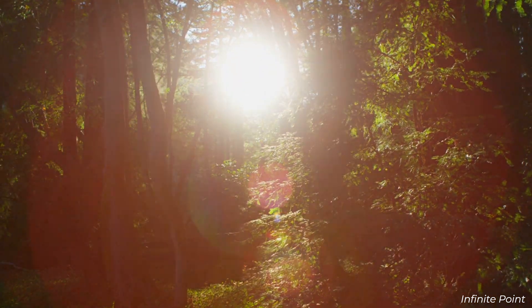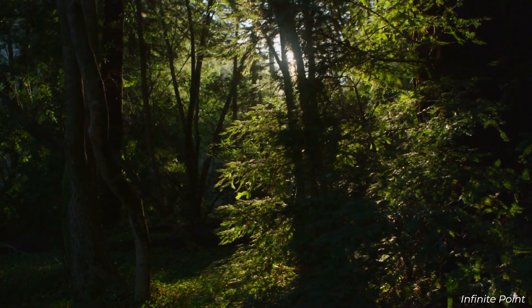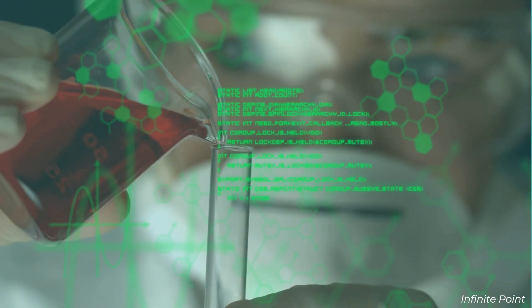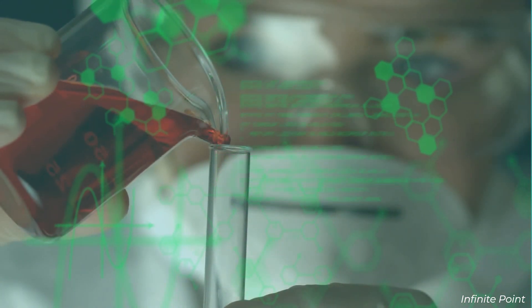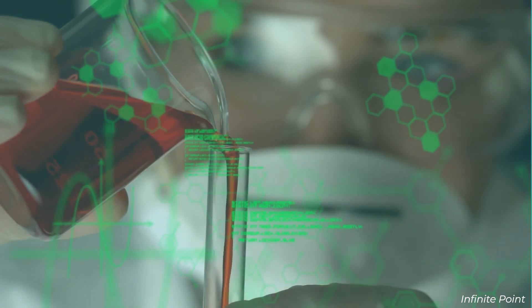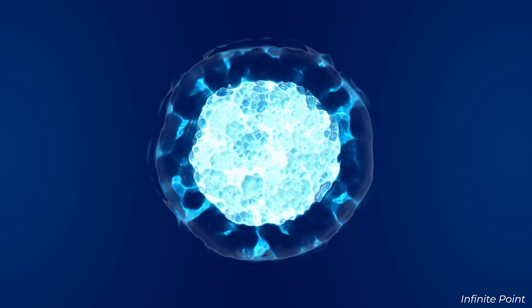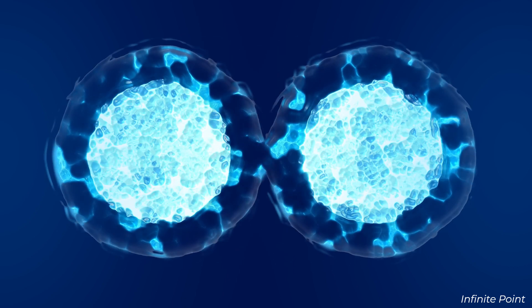This ability to process energy was critical for maintaining internal stability and driving the chemical processes necessary for replication and evolution. Over time, these simple systems became more sophisticated, eventually leading to the first true cells.